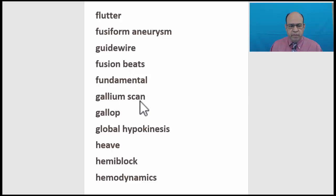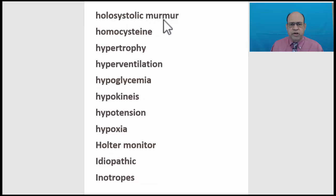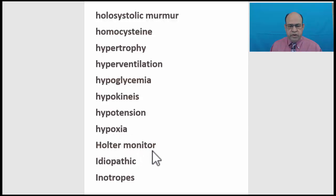Gallium scan. Gallop. Global hypokinesis. Heave. Hemiblock. Hemodynamics. Holosystolic murmur. Homocysteine. Hypertrophy. Hyperventilation. Hypoglycemia. Hypokinesis. Hypotension. Hypoxia. Holter monitor.